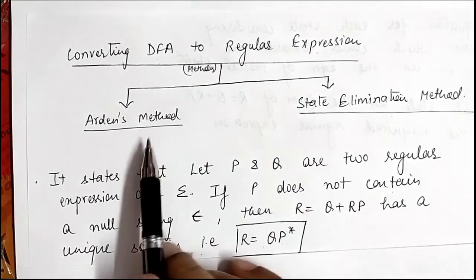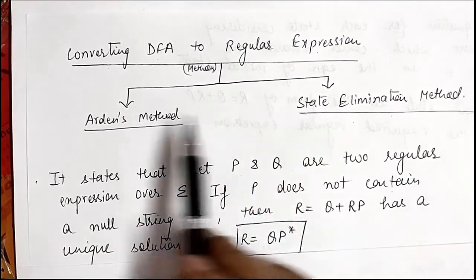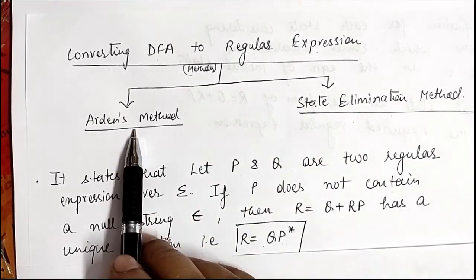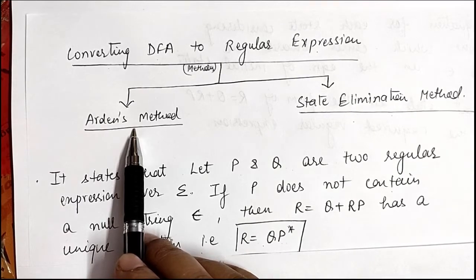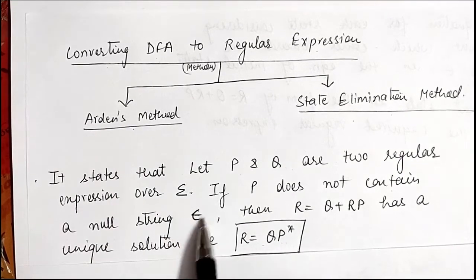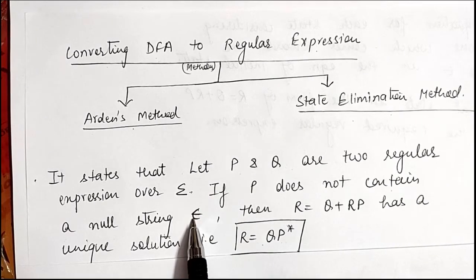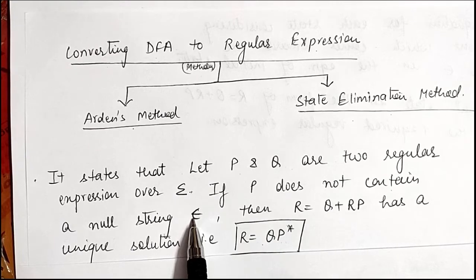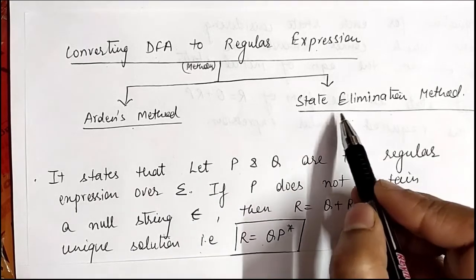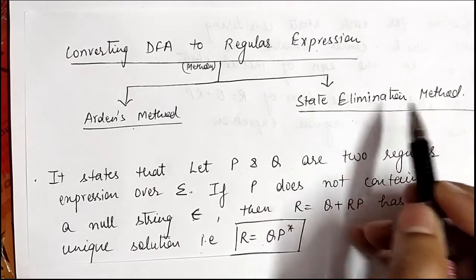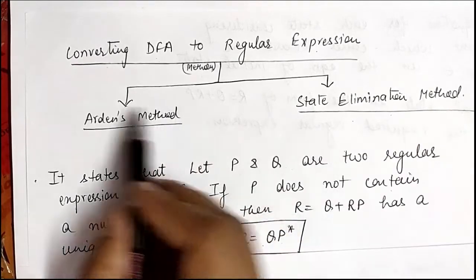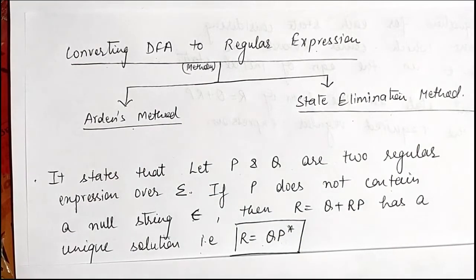The main difference between these two methods is that Arden's method is applicable only when the DFA does not contain a null string, that is epsilon. If a DFA contains epsilon, then in that problem we only use the state elimination method. So for Arden's method, the DFA must not contain a null string.